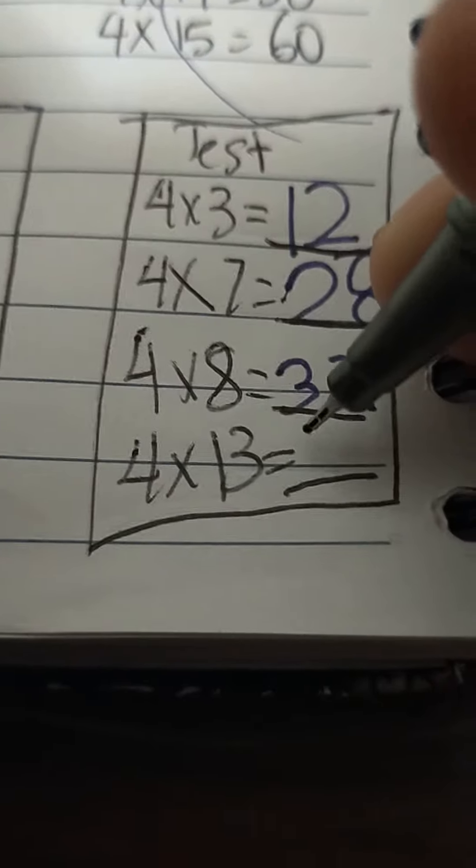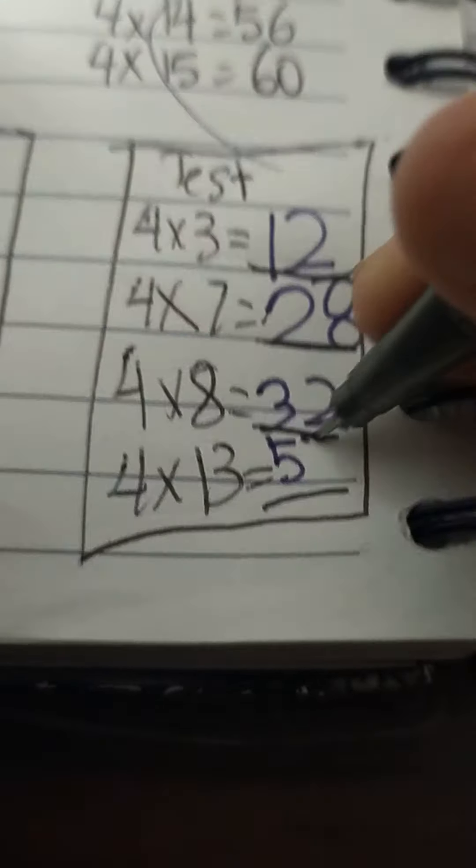Eight, it's thirty-two. Four times thirteen is fifty-two.